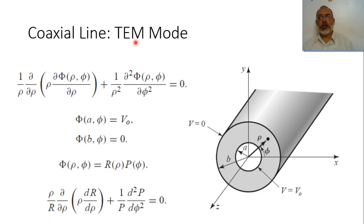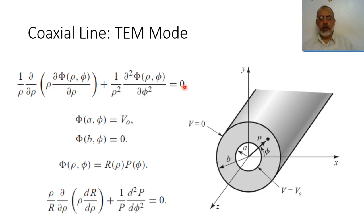If we are interested in solving the transverse electromagnetic mode in a coaxial transmission line or coaxial waveguide, we solve Laplace's equation. This structure has geometry suitable for cylindrical coordinates, so we represent Laplace's equation in cylindrical coordinates: ∇²φ = 0, which becomes (1/ρ)(∂/∂ρ)(ρ ∂φ/∂ρ) + (1/ρ²)(∂²φ/∂φ²) = 0.